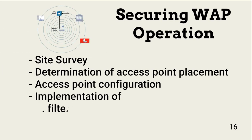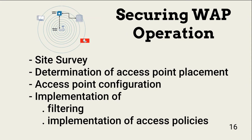Let's look at securing the operation of wireless access points, or WAPs. A WAP receives signals from and sends signals to the client, acting as an access point through which wireless devices can reach and use network resources. Securing the use of WAPs is a process consisting of: first, a site survey; followed by determining access point placement; then configuring the access points; and finally, implementation of filtering or other access controls.